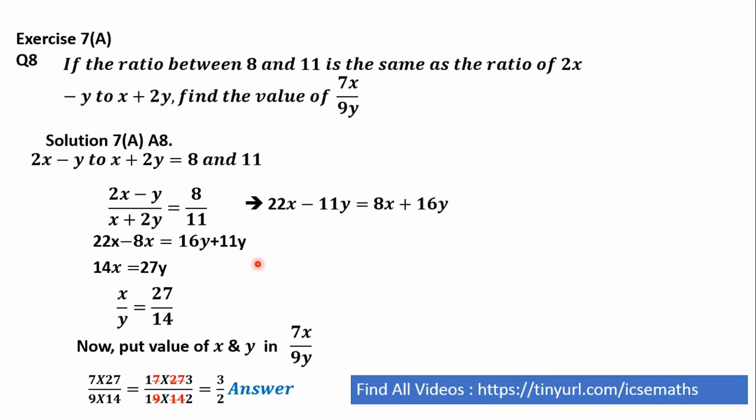So this is a very simple question. Only the trick here is you need to understand this first equation 2x minus y to x plus 2y is equal to 8 and 11. So you need to convert this into this format: 2x minus y upon x plus 2y is equal to 8 by 11. If you are able to get this thing then you can solve this question very easily.